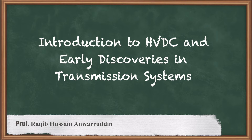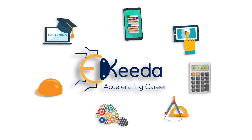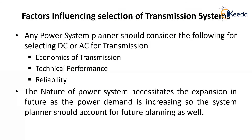Let us start with the factors influencing the selection of transmission systems. Any power system planner should consider the following for selecting DC or AC transmission systems. The first is economics of transmission, which is the cost of transmission — we will cover that in a separate video. Next comes technical performance and feasibility, whether the transmission is technically sound under all conditions, and third is reliability, which we will also discuss in forthcoming videos.